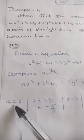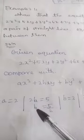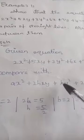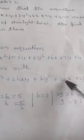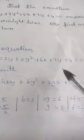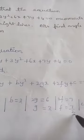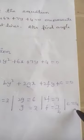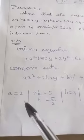Comparing the given equation with the general form: a = 2, 2h = 5 so h = 5/2, b = 3, 2g = 6 so g = 3, 2f = 7 so f = 7/2, and c = 4.